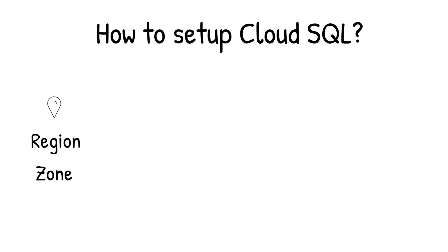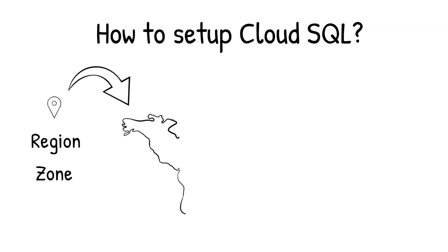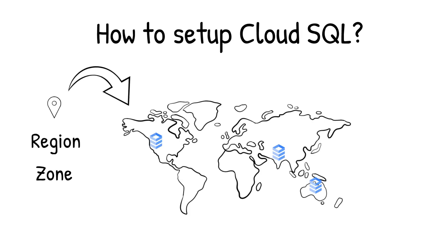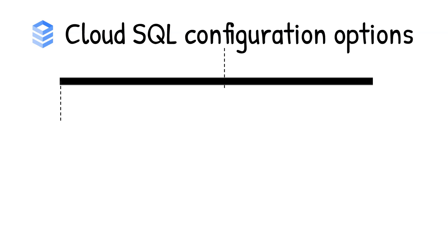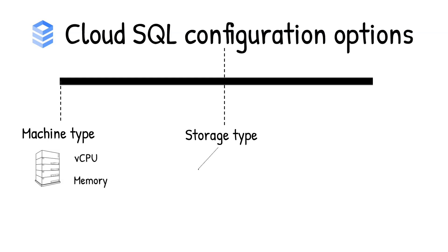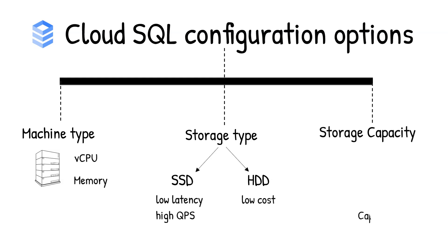Cloud SQL is easy to set up. You select the region and zone where you would like the instance to be, and it gets created there. You also have a lot of configuration options, where you can select the machine type with the right number of CPUs and amount of memory you need. Choose storage type between solid state and hard disk drives, depending on latency, queries per second, and cost requirements. And set storage capacity — higher storage capacity leads to better performance.